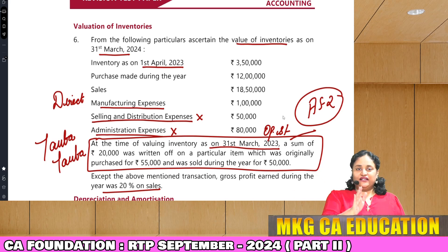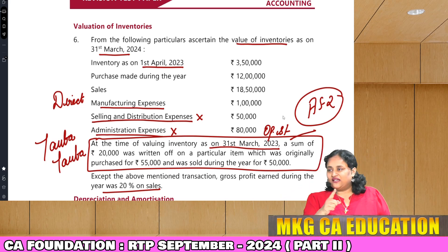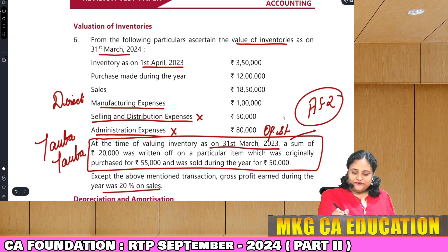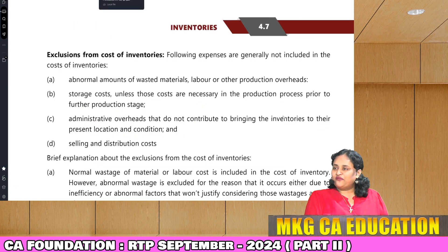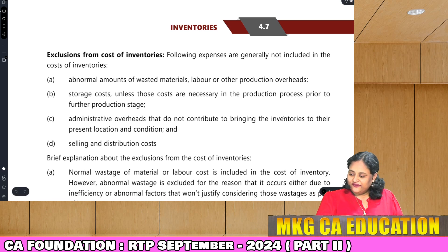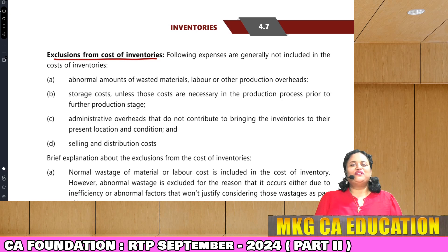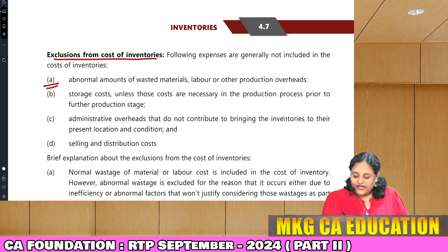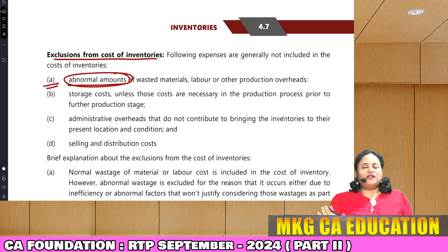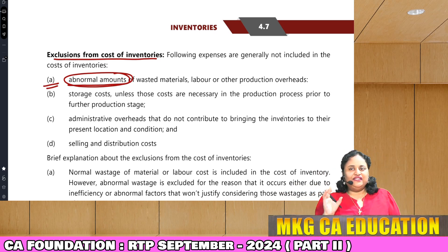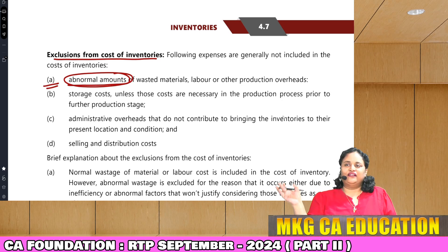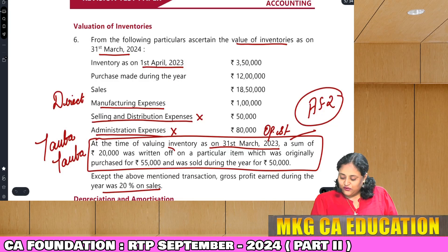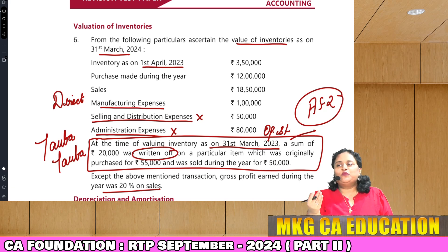Let's revise once. This is from your institute module page number 4.7 — exclusions from cost of inventories. What does not come in inventory? First point: abnormal amounts. Whatever is abnormal does not come inside inventory — we have to remove them from inventory. So when the question says we wrote off something on stock, that becomes an abnormal item. And this same stock was sold ahead — that is also an abnormal item.